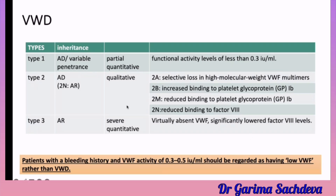To recap: type 3, which is autosomal recessive, is the most severe; type 1 is the least severe and autosomal dominant; type 2 is in between and can be either autosomal dominant or recessive. Patients with a bleeding history and von Willebrand factor activity of 0.3 to 0.5 should be regarded as having low von Willebrand factor rather than von Willebrand disease. To classify as von Willebrand disease, the level should be less than 0.3.